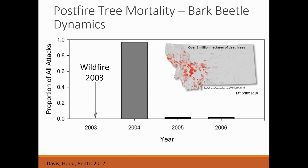It also wasn't from a lack of bark beetle pressure. The map inset in red shows mountain pine beetle activity and mortality in western Montana about the same time frame. When this wildfire occurred, it was in the midst of a large regional mountain pine beetle outbreak. So there were plenty of beetles flying around, but we weren't observing them attacking and killing trees after that first year of fire.